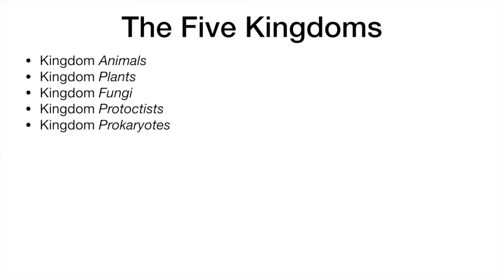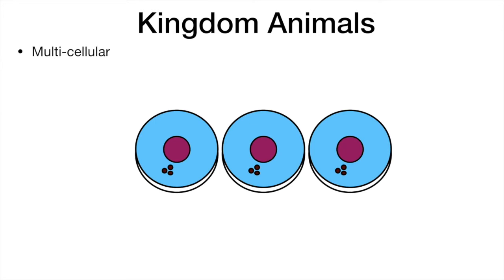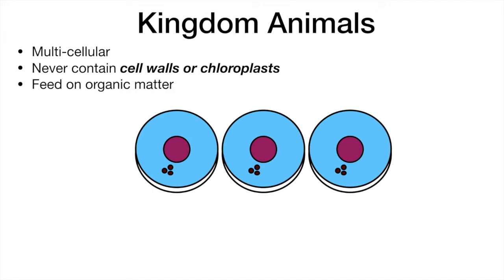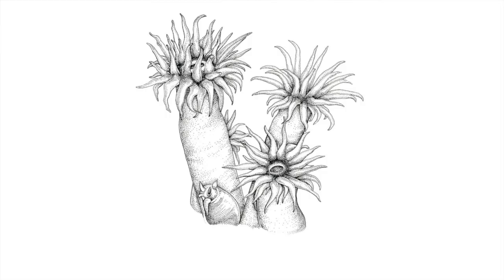Let's see the characteristic features of each kingdom. All animals are multicellular. They all have a nucleus but can never contain cell walls or chloroplasts. All animals feed on organic substances made by other organisms. Even though sea animals were once classified as plants, at closer look scientists found that they didn't contain cell walls or chloroplasts, and because of that they are now classified as animals.